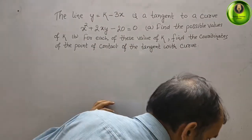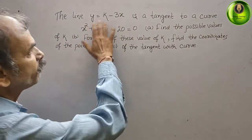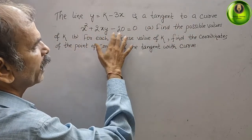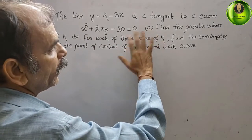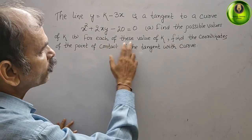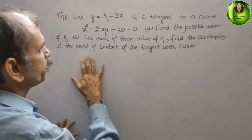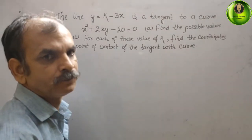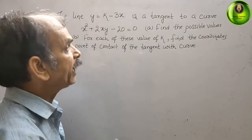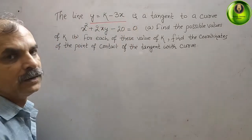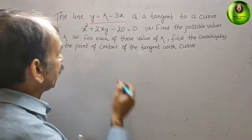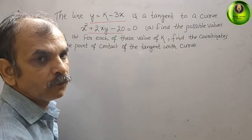The question states: the line y = k - 3x is a tangent to a curve x² + 2xy - 20 = 0. Part (a): find the possible values of k. Part (b): for each value of k, find the coordinates of the point of contact of the tangent with the curve. They have given this line formula and the curve equation.